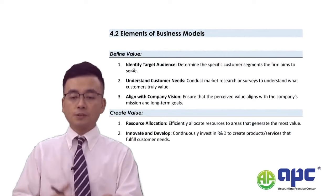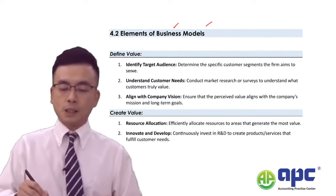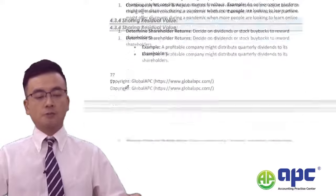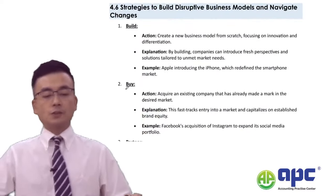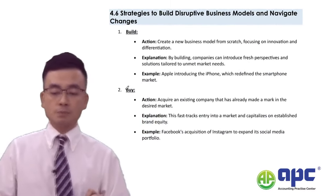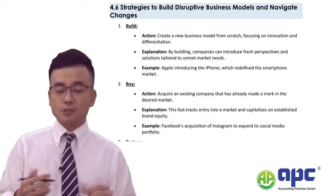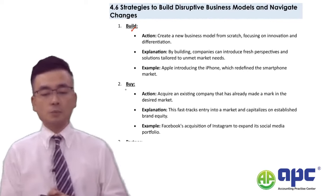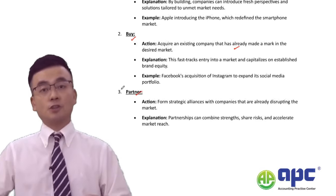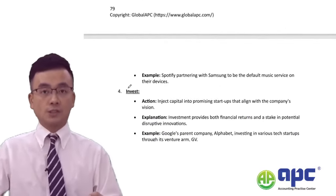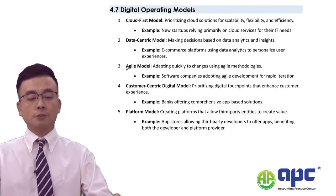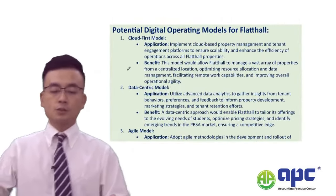Section 4.2 about the elements of business models has been analysed in the pre-seen — you can read that on your own. Section 4.6 in my notes is about strategies to build disruptive business models. There will be different strategies: building these models from scratch, alternatively buying somebody in the market, or becoming a partner under a joint venture agreement to share risks and rewards. There would also be different digital operating models — for example, the cloud-first model applied to FlapTor, linking all systems in the cloud.